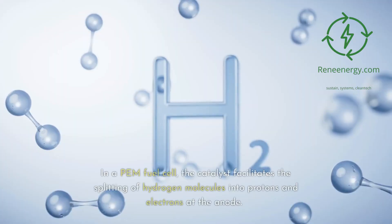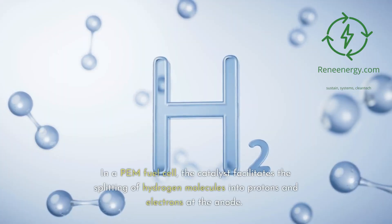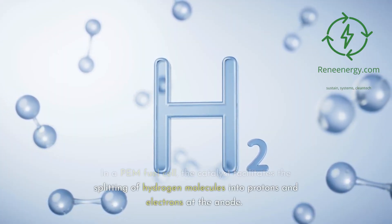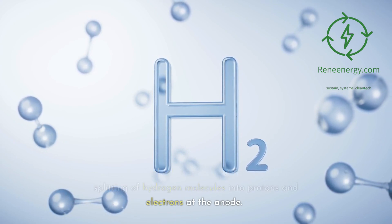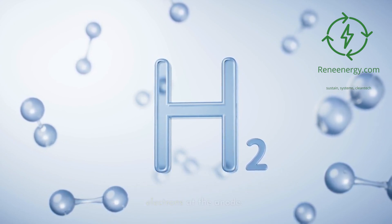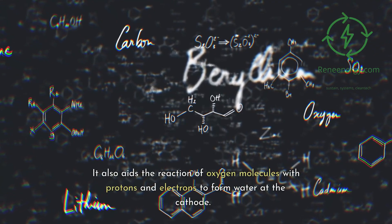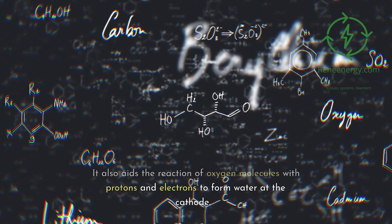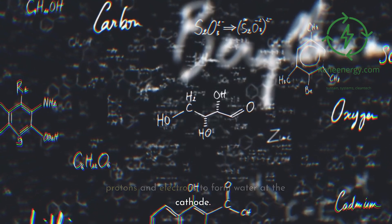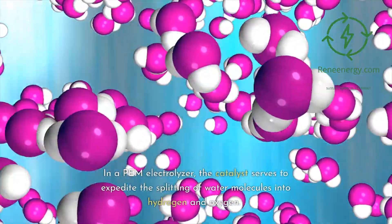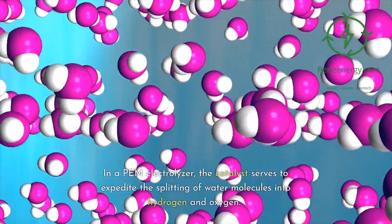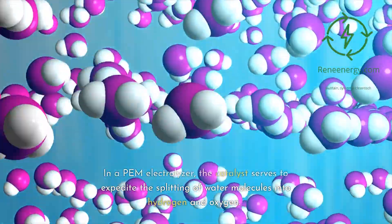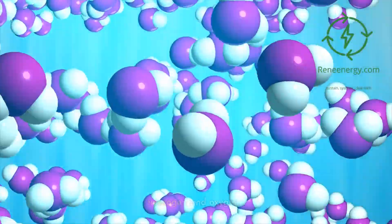In a PEM fuel cell, the catalyst facilitates the splitting of hydrogen molecules into protons and electrons at the anode. It also aids the reaction of oxygen molecules with protons and electrons to form water at the cathode. In a PEM electrolyzer, the catalyst serves to expedite the splitting of water molecules into hydrogen and oxygen.